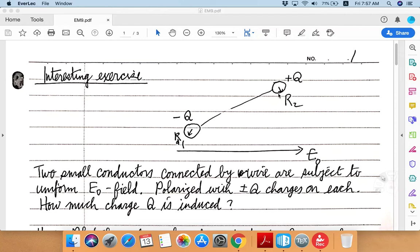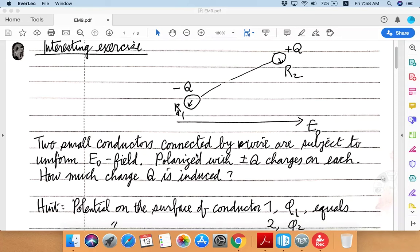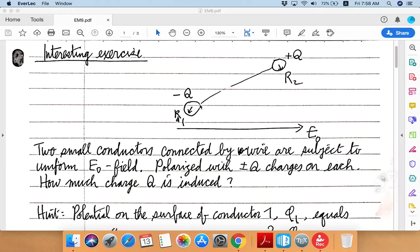I'm going to assume that each sphere has a radius r2 and r1 over here. Okay, so can we solve this problem? Well, the clue to the solution is, as I mentioned earlier, is that these two potentials have to be equal. So the potential on the surface of the first conductor better be equal to the potential on the surface of the second conductor because they're connected by a wire which itself has no potential drop across it.